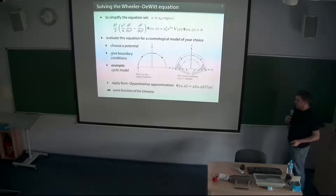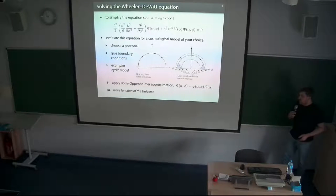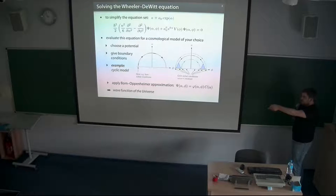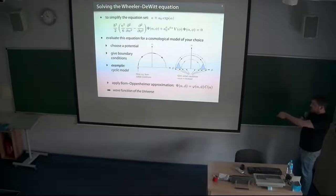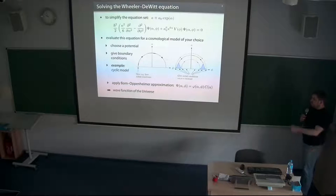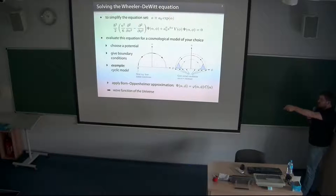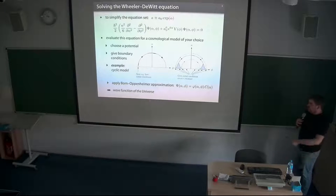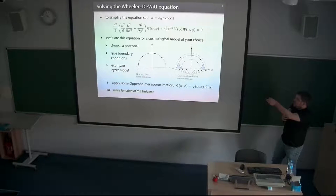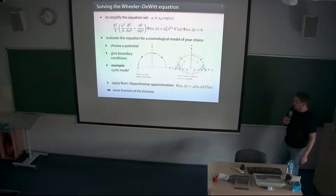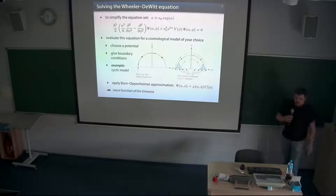If you wanted to do a quantum cosmological model of this cyclic universe, in the classical case you just need to give initial conditions at the point of the big bang. But since there is no time in the Wheeler-DeWitt equation, in the quantum cosmological model you would have to give initial conditions at, for example, A equal to a constant. This would be initial conditions at the time where a big bang or big crunch somehow happened — but they don't really happen because there is no time either. What one then does is decompose the wave function into a matter part and a gravitational part, apply a WKB approximation to the gravitational part, and then get a wave function of the universe.